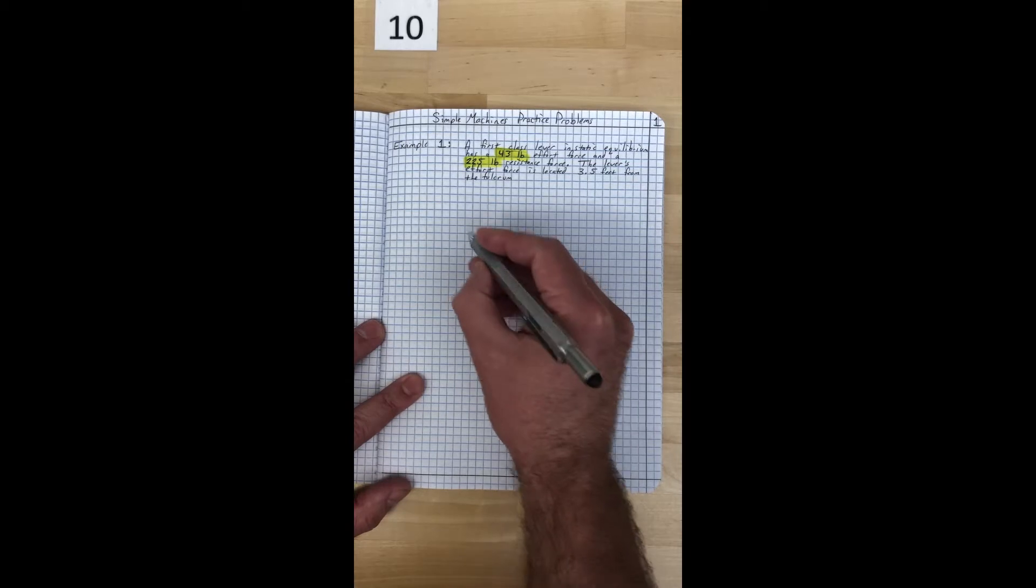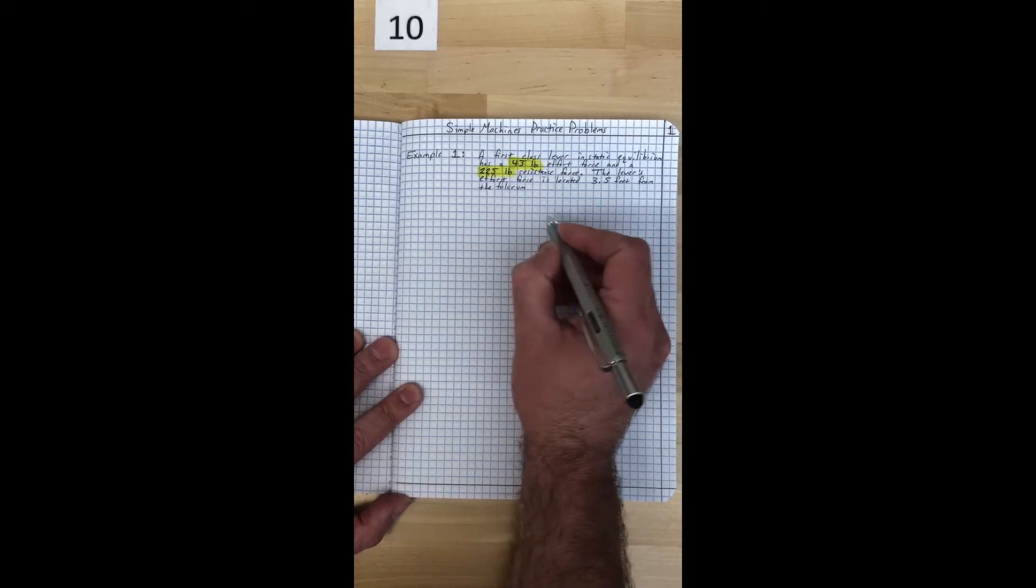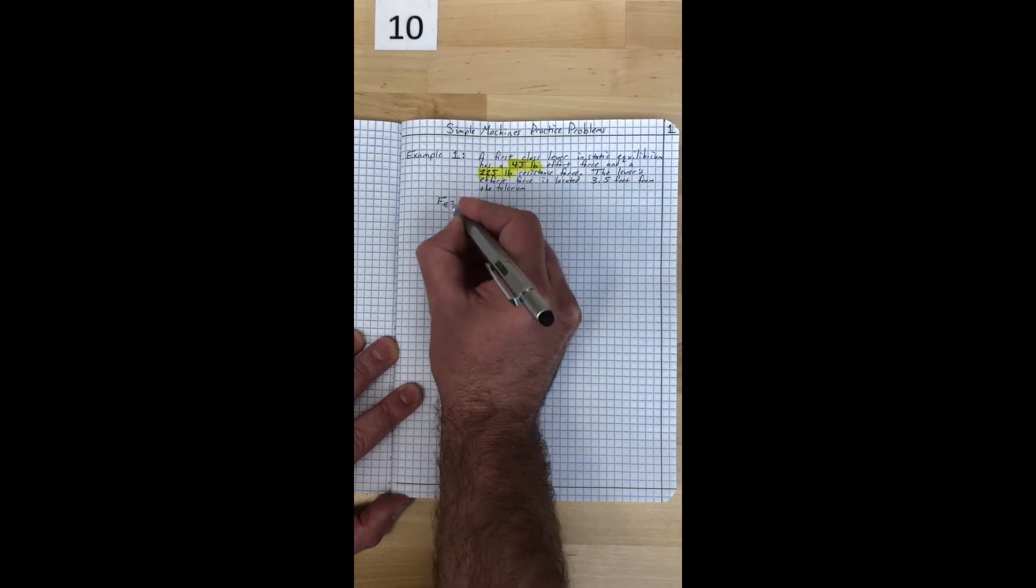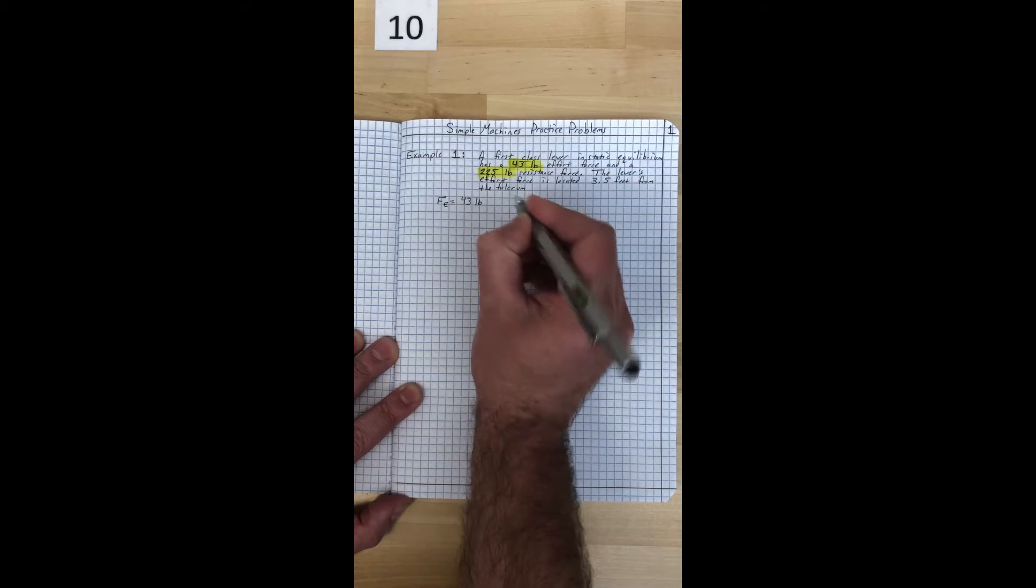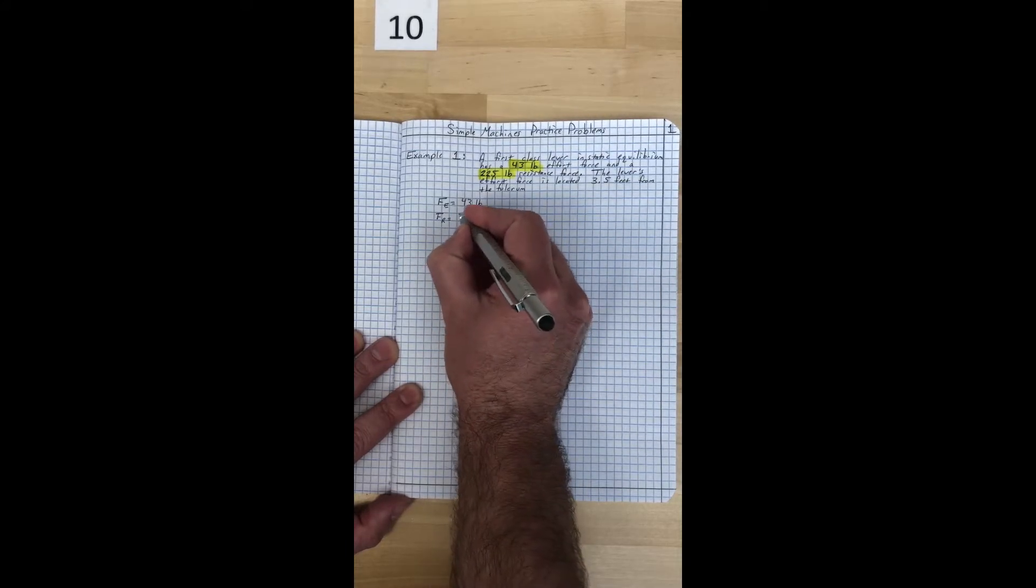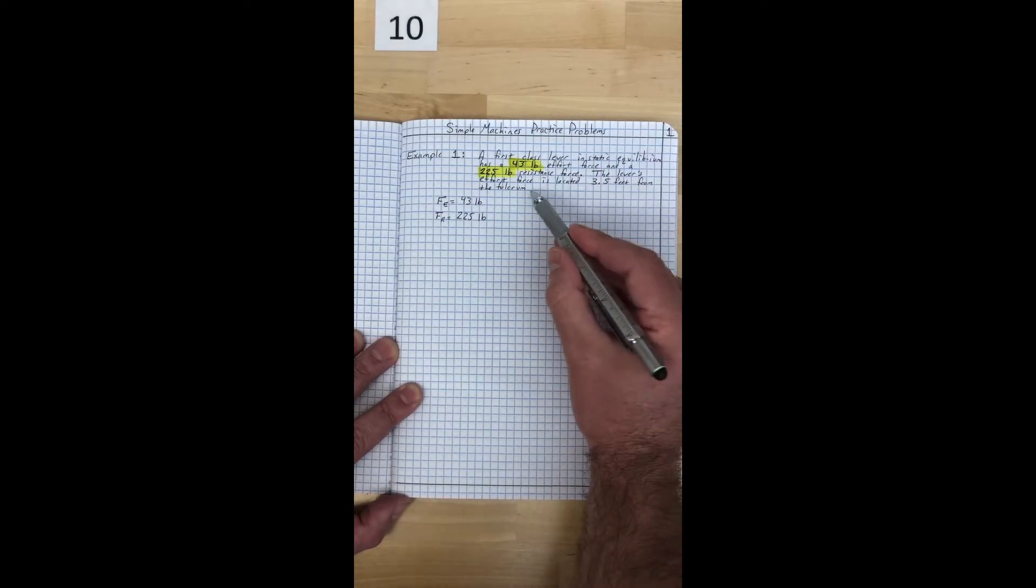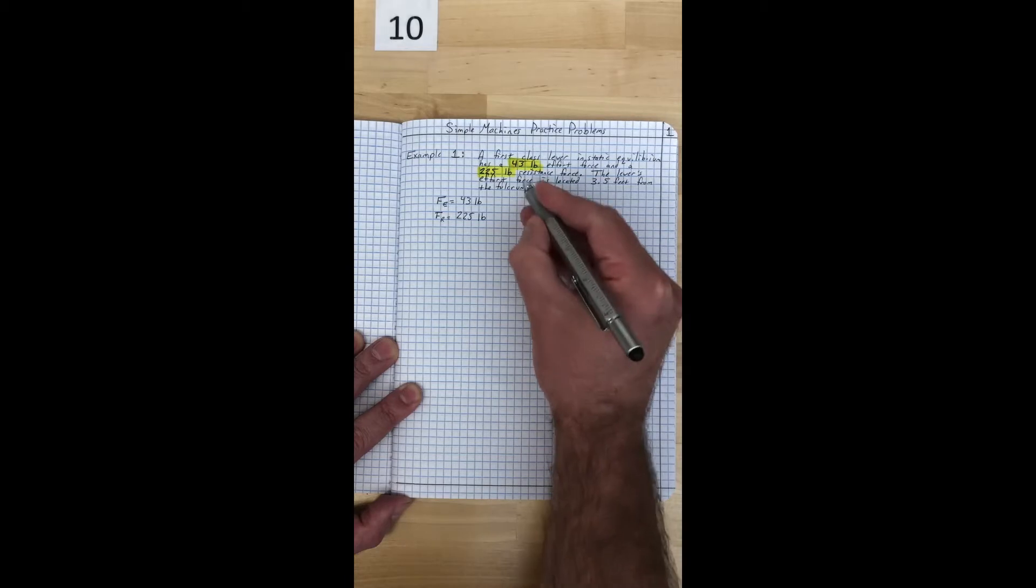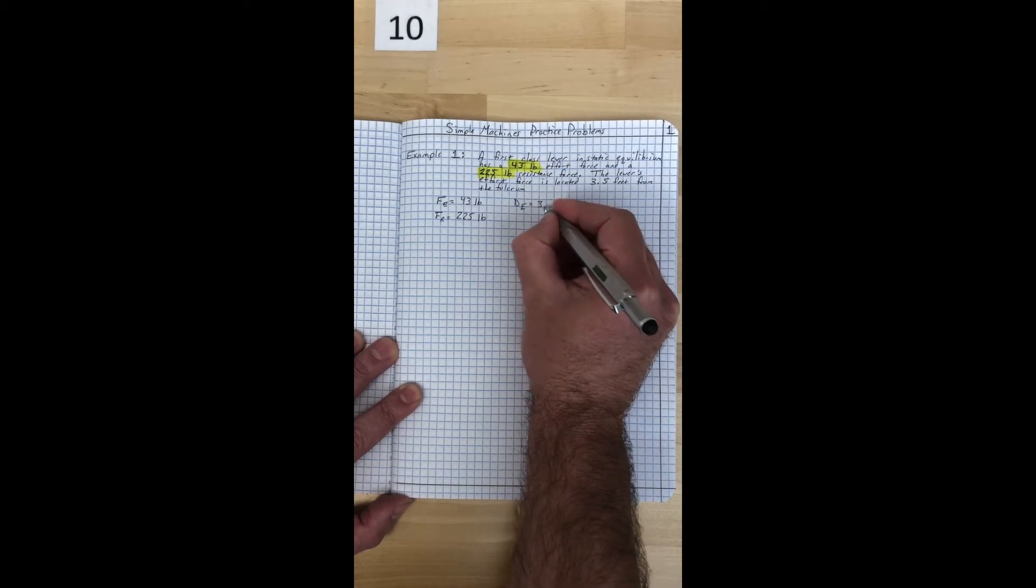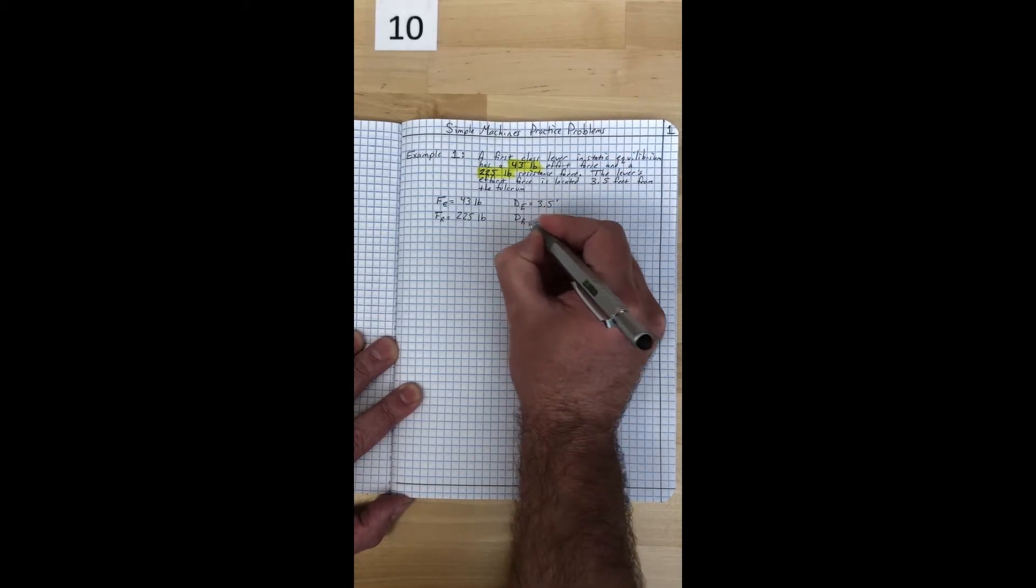The first thing that we need to do is sketch out the problem. I like to label everything first. My effort force, F subscript E, equals 43 pounds. My resistance force, F subscript R, equals 225 pounds. The effort distance, D subscript E, equals three and a half feet. The resistance distance is our unknown and that's what we want to find.